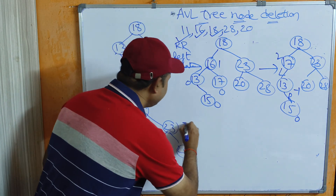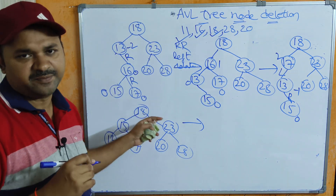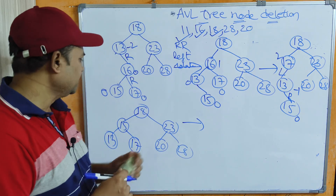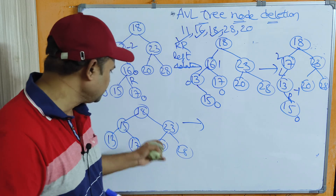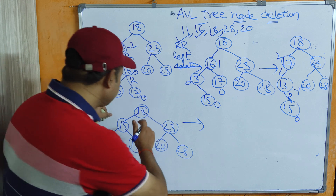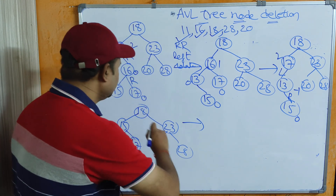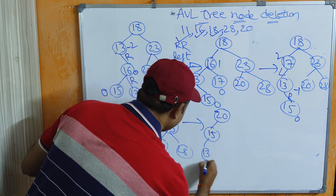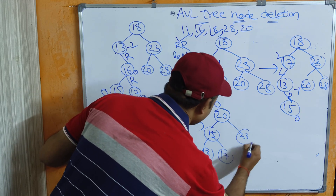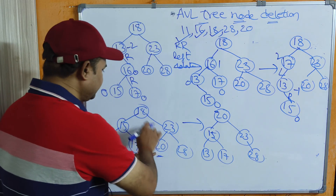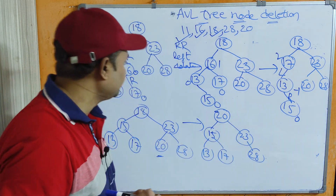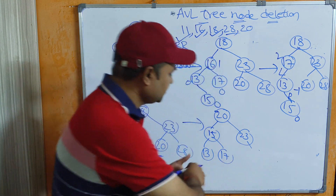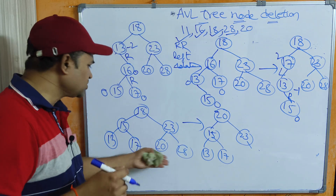Now delete node 18. Compare 18 with 18 — same, found. Node 18 has two children. Following the second approach — inorder successor — the right subtree minimum value is 20. So replace 18 with 20. The remaining structure: 15 with children 13 and 17, and 23 with right child 28. This tree is already balanced, so no rotation is needed. Next, delete 28, which is a leaf node, so directly delete it. The tree remains balanced and no rotation is needed.